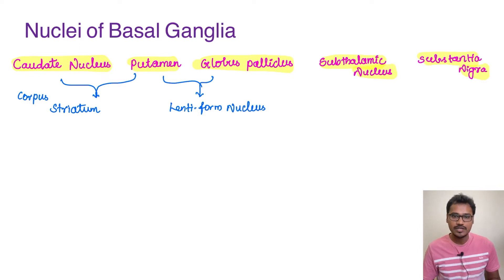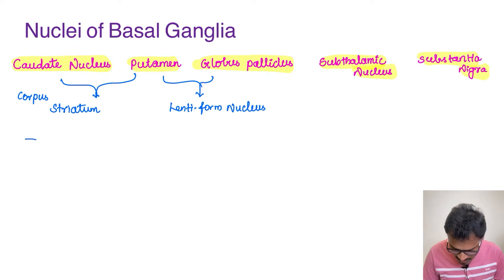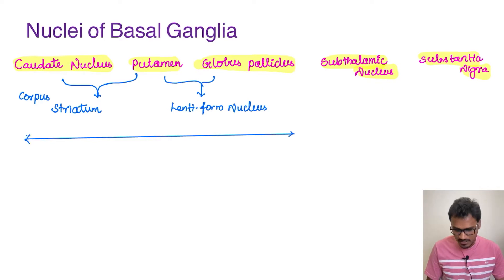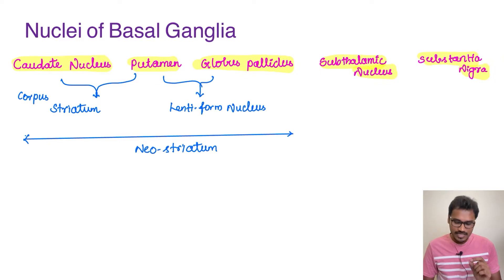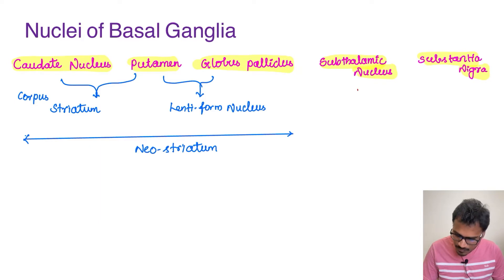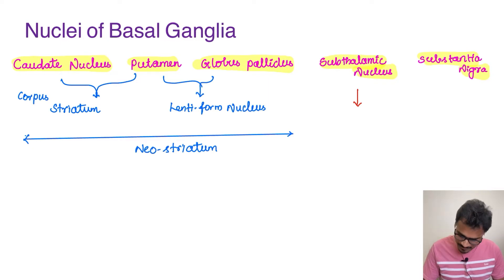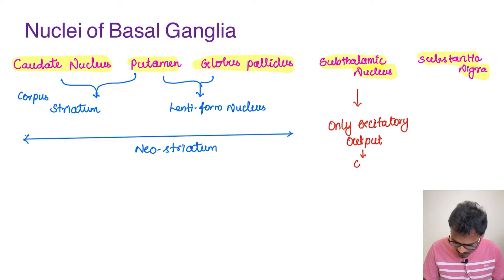Clubbing all three nuclei — caudate, putamen, and globus pallidus — or clubbing the corpus striatum along with the globus pallidus — they are called the 'neostriatum.' Coming to the subthalamic nucleus, a very important point: it is the only excitatory output from the basal ganglia. It is the only group of neurons giving an excitatory output, and the excitatory neurotransmitter involved is glutamate. This is important for MCQs as it is an exception; all other nuclei produce inhibitory neurotransmitters.